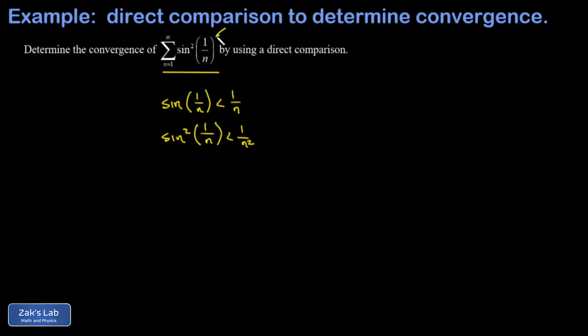In other words, every term of the series of interest is less than 1 over n squared. So we're going to do a direct comparison to the series 1 over n squared as n goes from 1 to infinity.